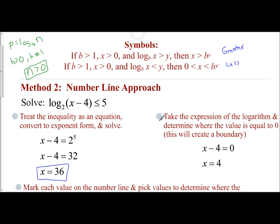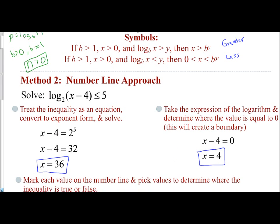I then take the expression in the logarithm, the x minus 4, and I set it equal to 0. And that gives me x equals 4. I take these two values, and I mark them on the number line.